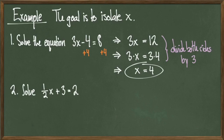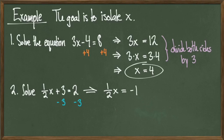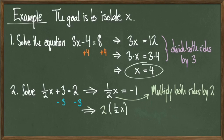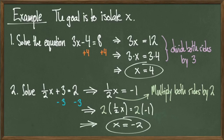In our next example, we'll solve the equation one-half x plus 3 equals 2. First, we'll subtract 3 from both sides, which gives us the revised equation one-half x equals negative 1. We still need to isolate x, so we're going to multiply both sides by 2 to cancel out the one-half. Writing this step down, we encase everything on the left and right-hand side in parentheses and multiply by 2 on the outside. Using parentheses is very helpful when dealing with fractions and negative signs. Since one-half and 2 cancel each other out, we get the solution x equals negative 2.